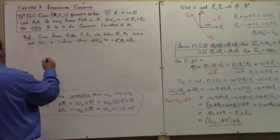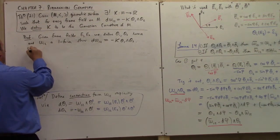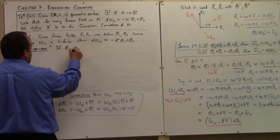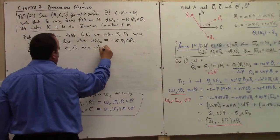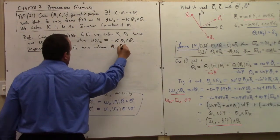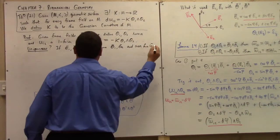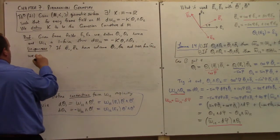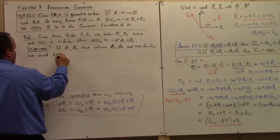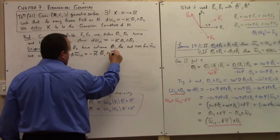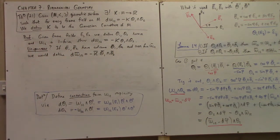This says there exists a unique function K. So is there just one choice of frame field on the surface? No, there are infinitely many. What if we choose a different frame? Considering uniqueness: if E bar 1 and E bar 2 have co-frame theta bar 1, theta bar 2, and connection form omega bar 1,2, we would define D omega bar 1,2 equals minus K bar theta bar 1 wedge theta bar 2. We seek to show K equals K bar — that's our goal.